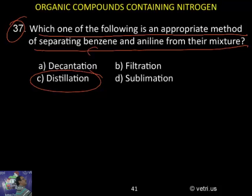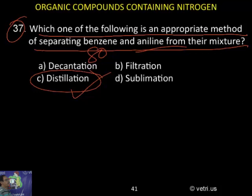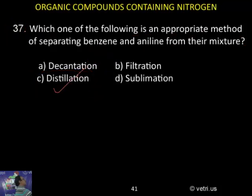Benzene boils at only 80 degrees, while aniline is greater than 120 degrees — more than that. So if any two liquids have a boiling point difference greater than 40 degrees, they can very easily be separated by ordinary distillation. So distillation is the answer — benzene and aniline can be separated. The correct answer is C.